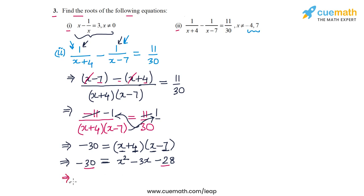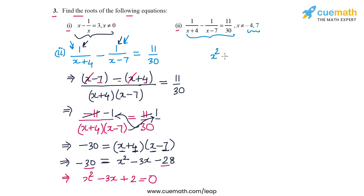This equation can finally be written as x² - 3x + 2 = 0. We can solve it by applying the quadratic formula, completing the square, or in this case we can also easily factorize the quadratic expression.